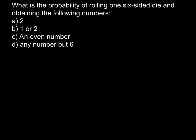And today I have a problem for you. What is the probability of rolling one six-sided die and obtaining the following numbers? I want to start from a very simple example. Imagine that this is a coin, and a coin has two sides, and we have a one half chance that if we toss it, it would land on one side.